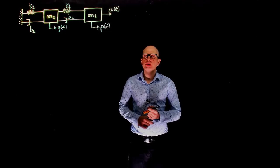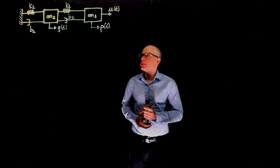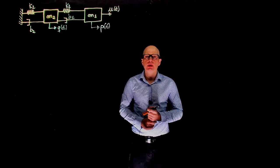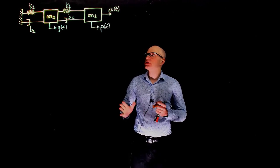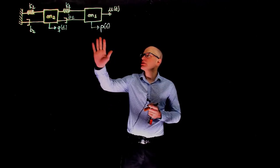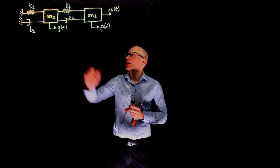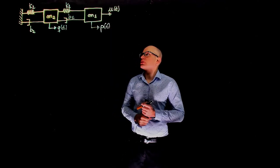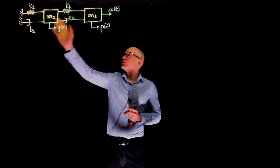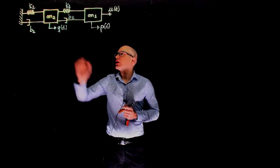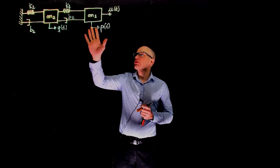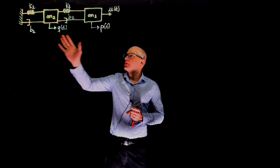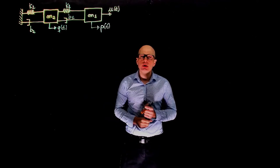In this first example, we are going to develop a state-space representation of this mass-spring-damper system. This system is relatively simple. We have two masses, m1 and m2. A force u is applied to mass m1. We have two springs and two dampers. The displacement of mass m1 will be called p, and mass m2 will be called q.